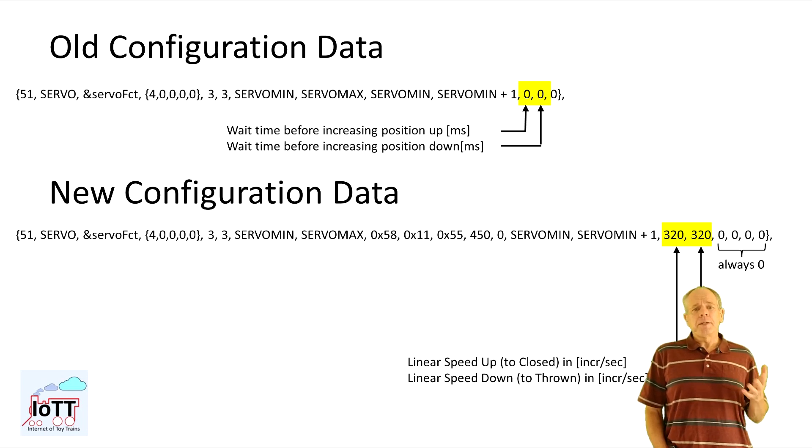At the end you see three more variables with a value of zero. Those are used internally by the status machine. It does not really matter, but it is best to just keep them at zero in the configuration data.